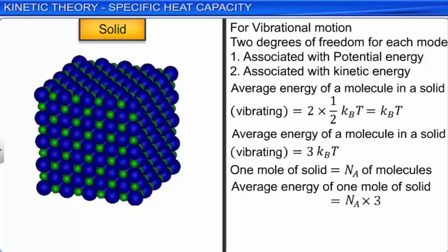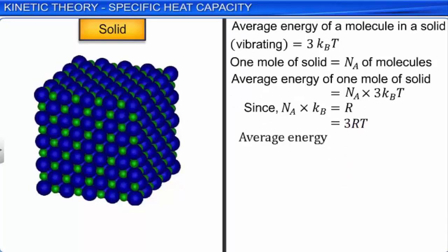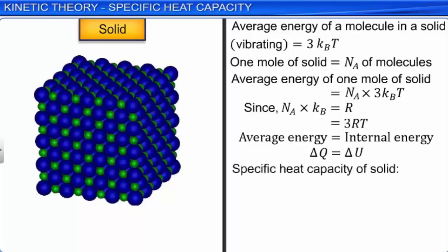The molecules of a gas move with an average velocity of the order of the velocity of sound. But when a perfume bottle is opened, it takes longer for the diffusion of molecules to far away places. This is because the molecules undergo frequent collisions with other molecules of the gas and, as a result, continuously change their paths. The average distance travelled by a molecule between collisions is called the mean free path.